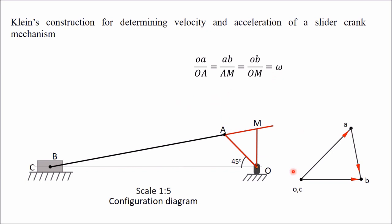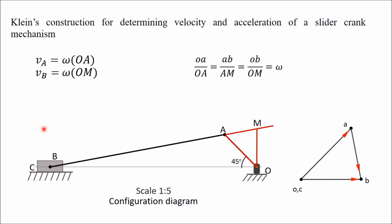Without drawing a separate velocity diagram, from the configuration diagram itself we can determine velocities of different elements. The velocity of A with respect to O equals omega × OA — measure that length and multiply by omega. Measure OM and multiply by omega to get velocity of the slider B. To get the velocity of the connecting rod (velocity of B with respect to A), measure length AM and multiply by omega.